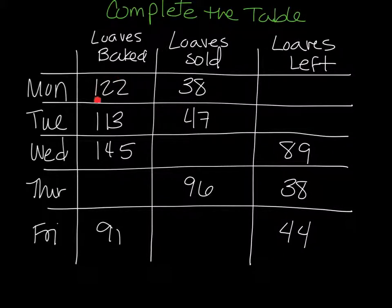This says that on Monday, there's 122 loaves baked. This one says on Monday, they sold 38. And this one says how many loaves are left. Okay, now, maybe they understand that, maybe they don't. Maybe they can read this.